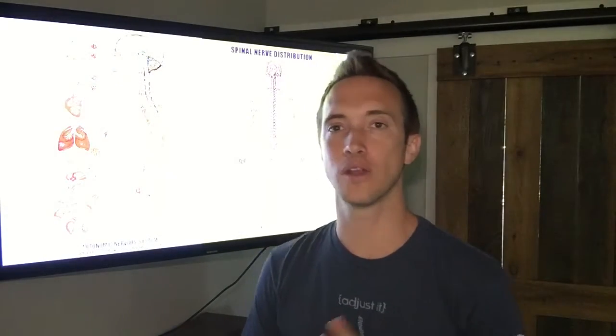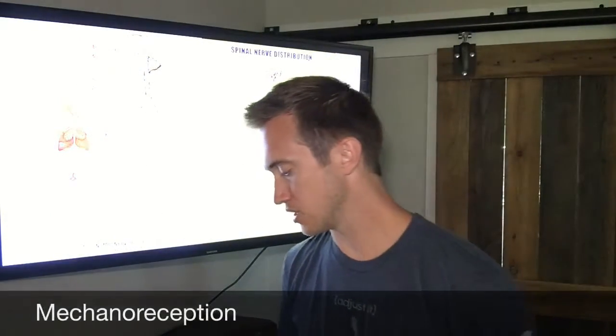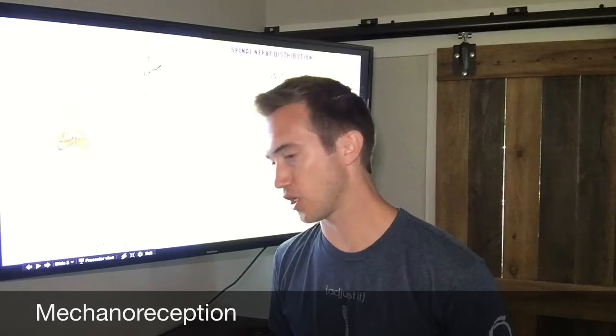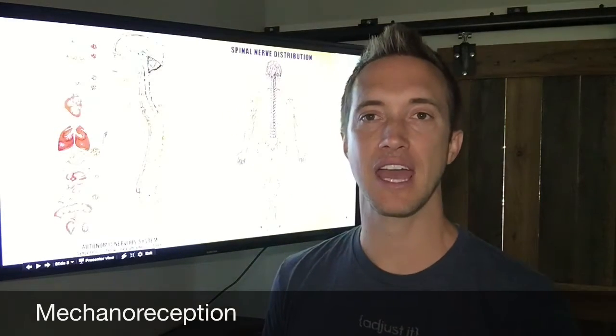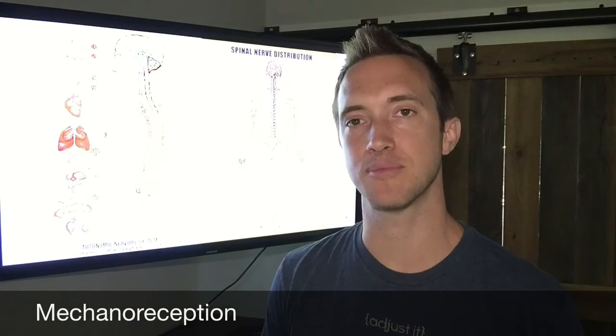There's this constant feedback loop. Information goes up to your brain. Your brain sends information back down. It controls the body. Now, I want to give you one word right here. This is a word that comes up in neurology a lot. It's called mechanoreception.